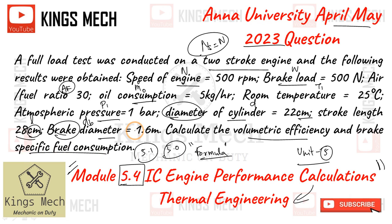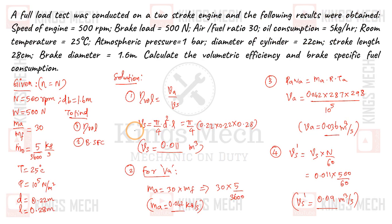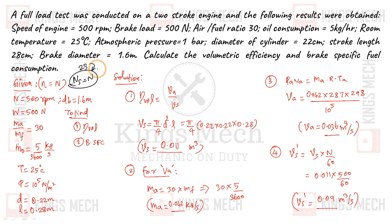Now we're going to calculate. First of all, here is the given data. N is equal to N - it is a two-stroke engine.